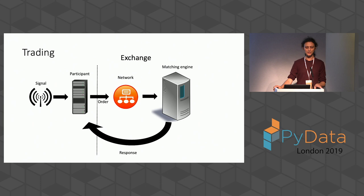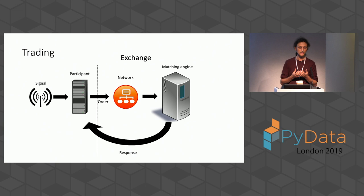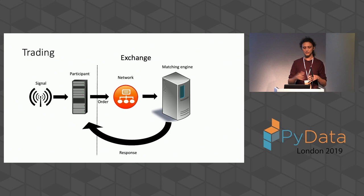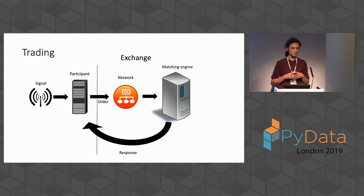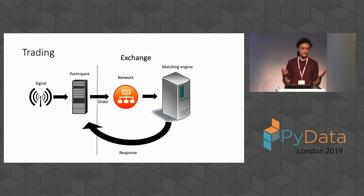When you get a signal, it comes with a reaction window attached to it. Suppose you get a tweet with a window of half a millisecond — you're not aware of it, but if the network is busy and it takes a full second to reach the exchange, you'll be too late and your orders won't be successful anymore. We want to avoid that.